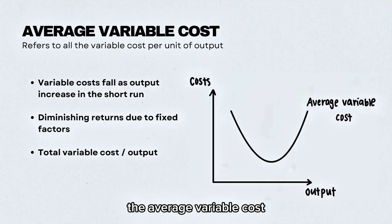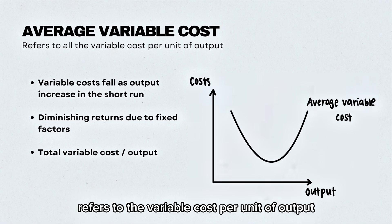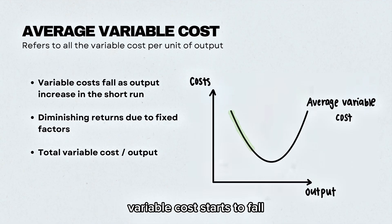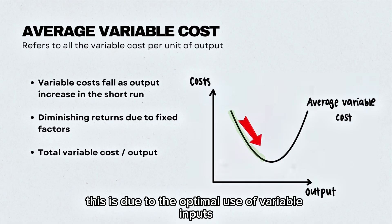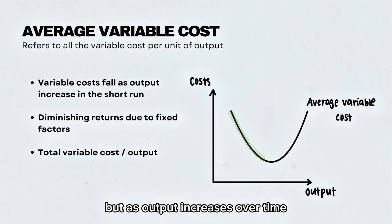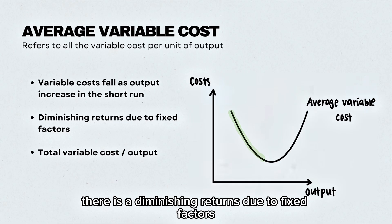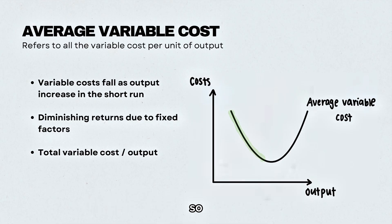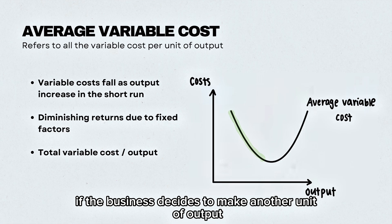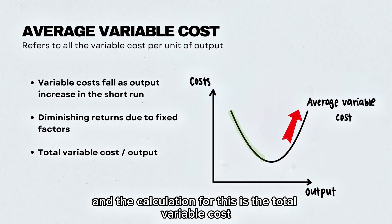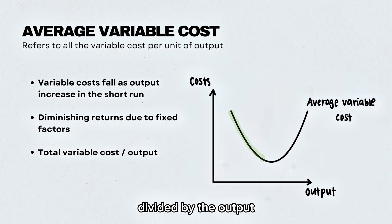The average variable cost refers to the variable cost per unit of output. The average variable cost starts to fall initially, due to the optimal use of variable inputs — this can be achieved through economies of scale. But as output increases over time, there is a diminishing return due to fixed factors, such as a business running at overcapacity. If the business decides to make another unit of output, it will be more expensive due to capacity issues. The calculation is total variable cost divided by the output.